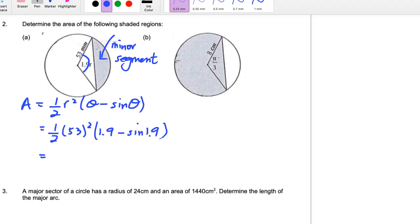Now I'm going to get a decimal answer, making sure that my calculator is in radians. I'm going to input this and I'm going to get 1,339.47 square millimeters, and that's to two decimal places. So there's my solution.